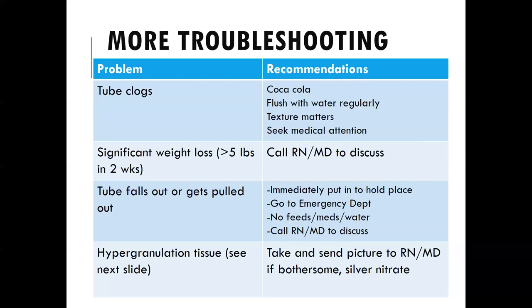Tube clogs depend on how often you use the G-tube and the type of formula. We always recommend flushing with water regularly before and after feeds and medications to prevent clogs. If a clog does happen, try using a small amount of Coca-Cola — the acidity can help break it up. Let it sit, then flush. You can also try diluting your feed with a little water or warming it to thin it out. If these don't work, contact your nurse or provider.